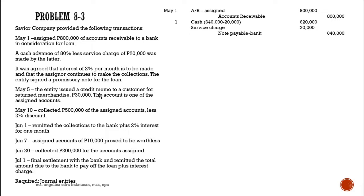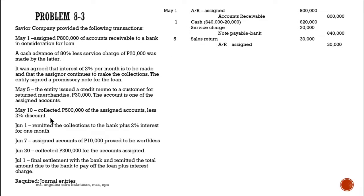On May 5, a credit memo is issued to a customer for returned merchandise. When a customer returns goods, we credit the account — the account is one of the assigned accounts. The entry is: debit sales returns, credit AR-assigned 30,000.